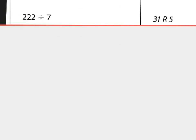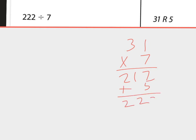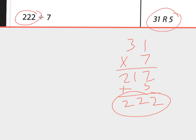Next one: 31 times the divisor equals 217, plus remainder gives 222, and that does equal our dividend — so the quotient is correct.